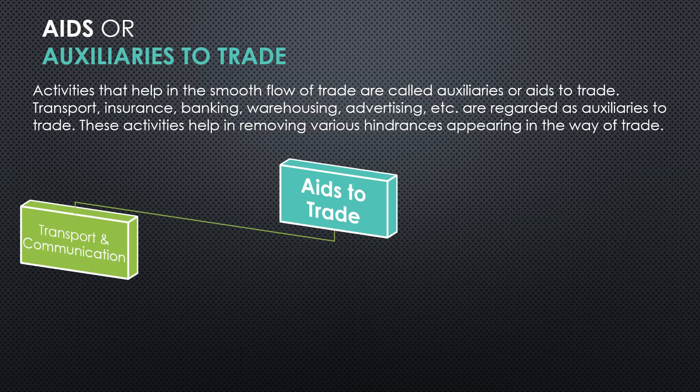The first aid is transportation. Transport refers to the movement of goods from one place to another. Production of goods takes place at one place and these goods are demanded at a different place, so this obstacle is removed by transport. For example, tea is produced in Assam and still we are drinking that tea every single morning — this hindrance is removed by the aid called transport.